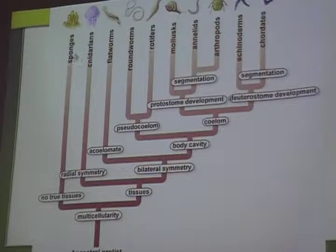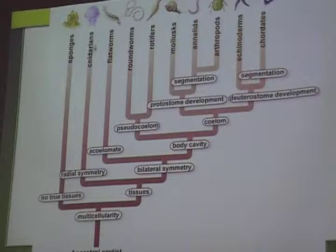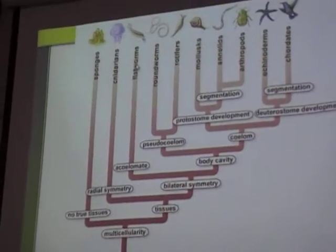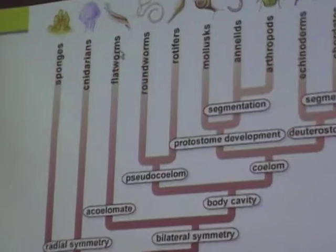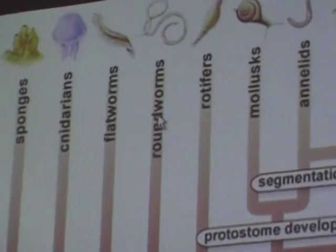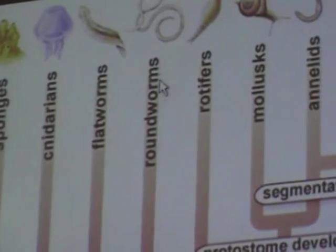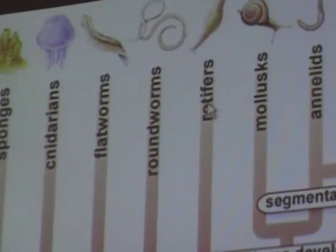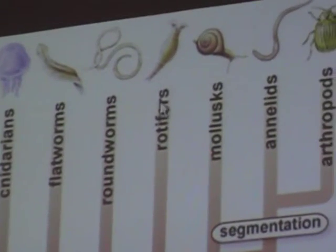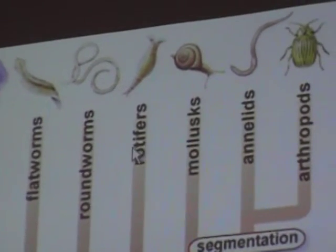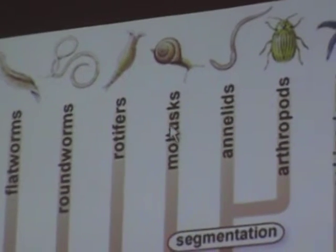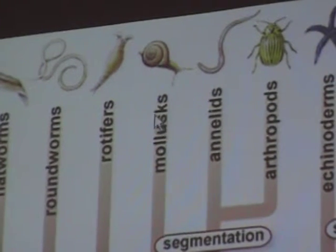Sponges came first, then cnidarians — those are like jellyfish and sea anemones. Then flatworms. Also tapeworms. Then roundworms — if your dog has ever had heartworms, hookworms, or something like that, those are roundworms. Rotifer is a little water animal you probably haven't heard of. Mollusks include snails and octopus and squid.